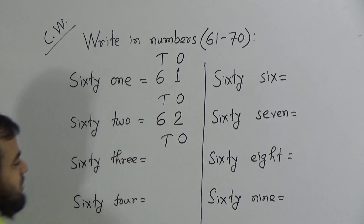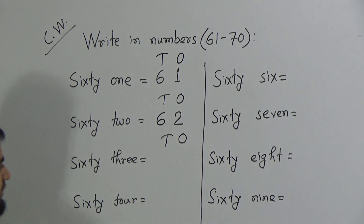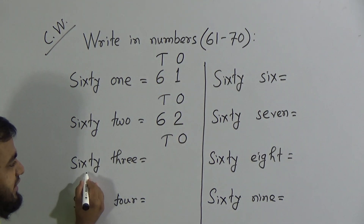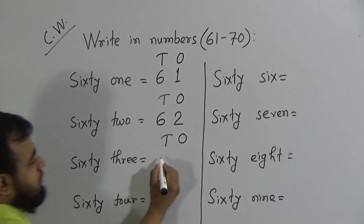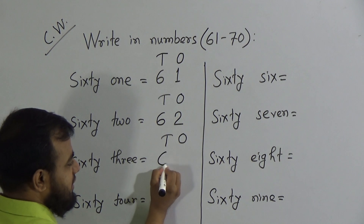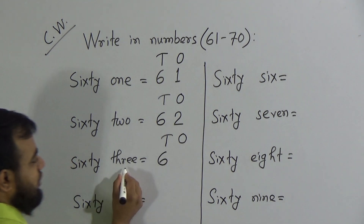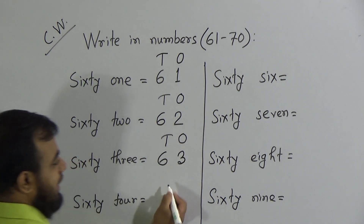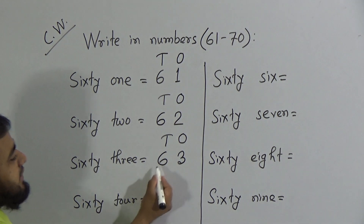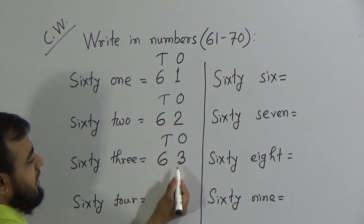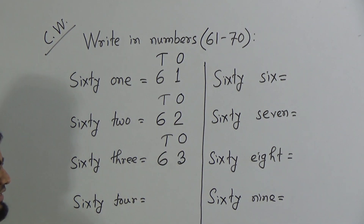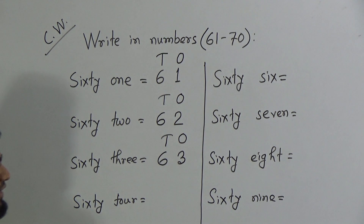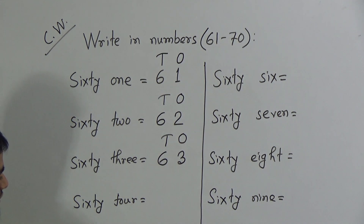Next number is 63. First indicate the place value, tens and ones. To write down 60, we write 6 in the tens place. To write down 3, we write 3 in the ones place. We say: six tens and three ones makes the number 63, or you can say directly six and three makes the number 63.